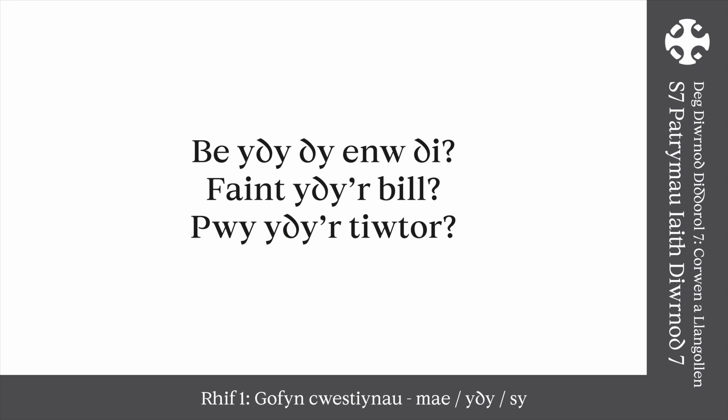Be, beth, faint, and pwy are usually followed by ydi. Be ydi dy eno di? — What's your name? Faint ydi'r bil? — How much is the bill? Pwy ydi'r tutor? — Who is the tutor? Remember, all of the words that follow are definite or specific nouns: your name, the bill, the tutor.